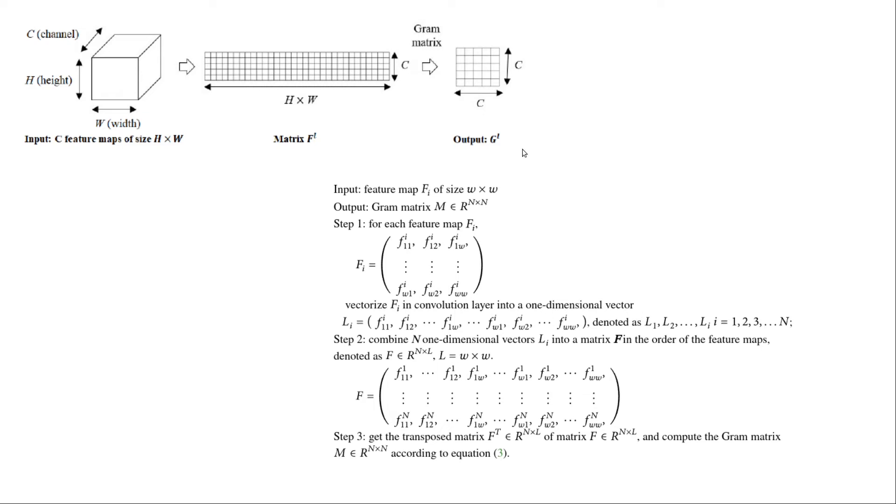Each of them is flattened like this. And then step two is to combine n one-dimensional vectors l_i into a matrix F in the order of the feature maps. And step three: get the transposed matrix F^T of matrix F and compute the Gram matrix according to equation three here.